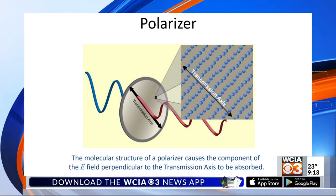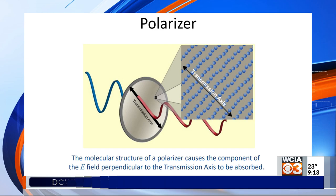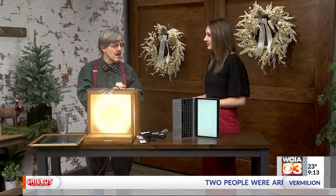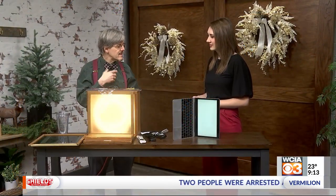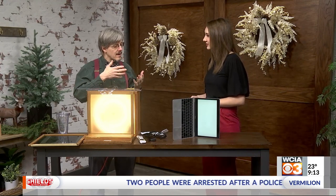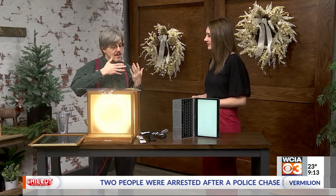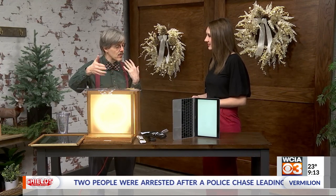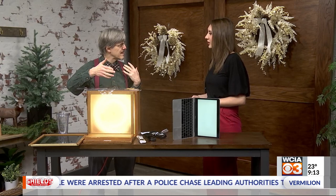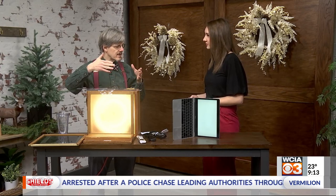We saw last time that you can use that, for example, for 3D movies, and also in polarizing sunglasses. If the material doesn't actually absorb the light, then it will go through, but it'll go through at a different speed. And if it goes in at an angle, it will bend — that's called refraction.